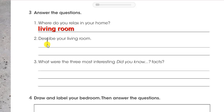For number two, describe your living room. And for number three, write a sentence that begins with 'did you know.' That's how you start doing it.